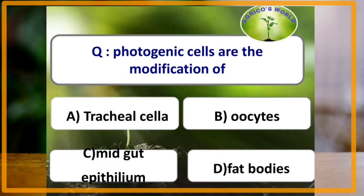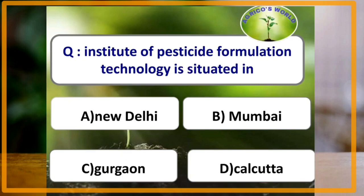Photogenic cells are modification of which of the following? The answer is fat bodies. Institute of Pesticide Formulation Technology is situated in Gurugram.